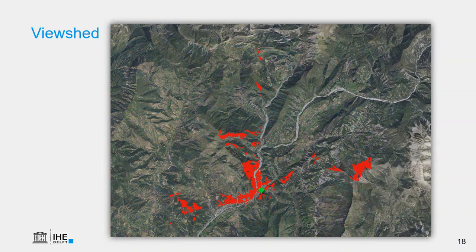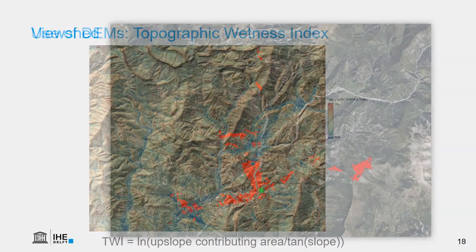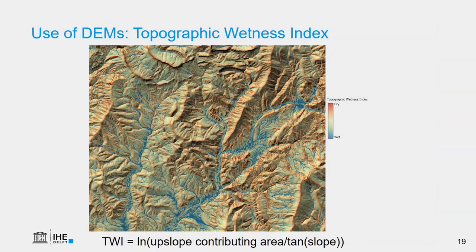In this example we see a viewshed — we have calculated the areas that are visible from the center of Digne-les-Bains, indicated in red. We can also derive more complex things from DEMs by applying equations. One example is the topographic wetness index, which is a function of the upslope contributing area divided by the tangent of the slope, and then the natural logarithm of that. It indicates which areas are dry and which are expected to be wetter.